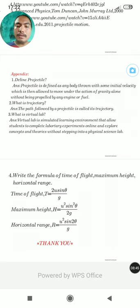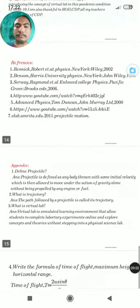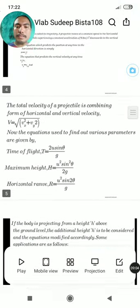Number four: Write the formula of time of flight, maximum height, and horizontal range. Time of flight T = 2u sin θ / g, maximum height H = u² sin² θ / 2g, and horizontal range R = u² sin 2θ / g. Okay, thank you. This is my virtual lab experiment.